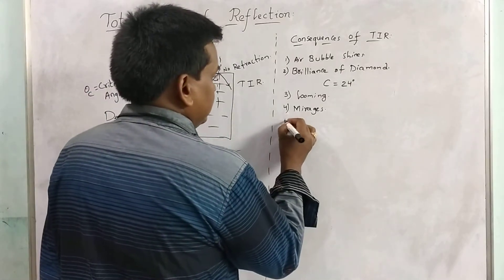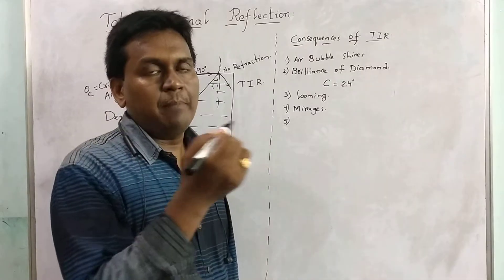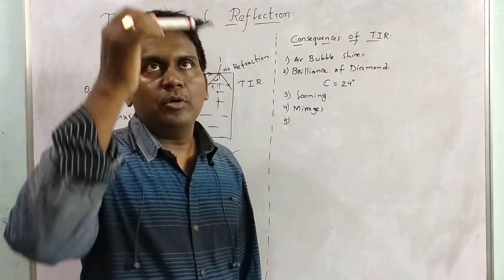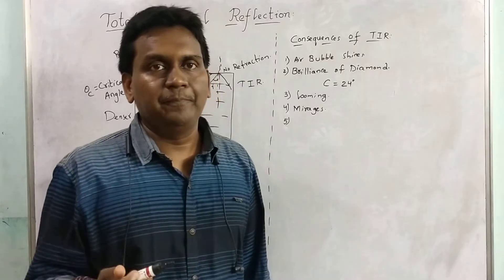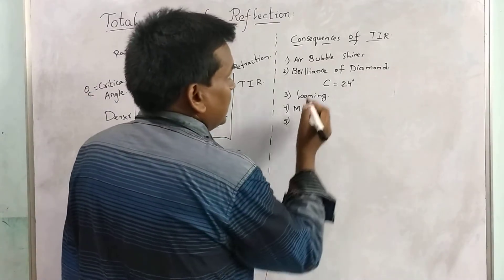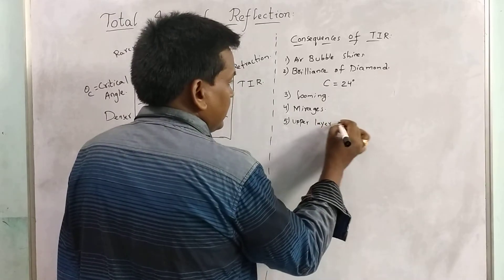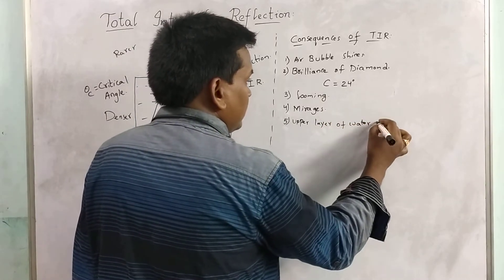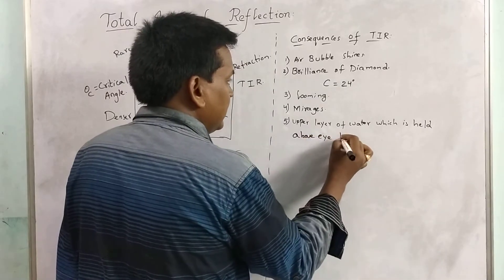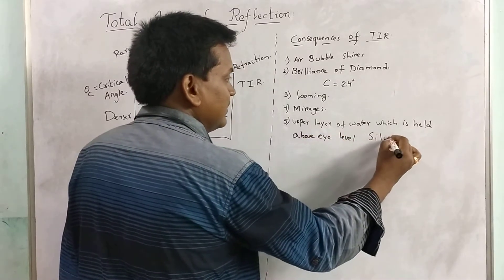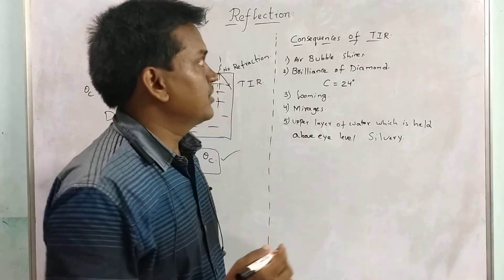If you consider a glass of water and observe the upper layer above eye level, the upper surface of the water appears silvery. Why it appears silvery is due to total internal reflection — the upper layer of water held above eye level appears silvery due to total internal reflection. These are all consequences of total internal reflection.